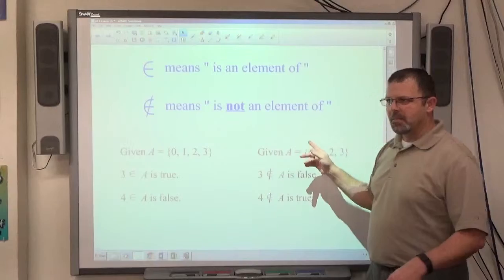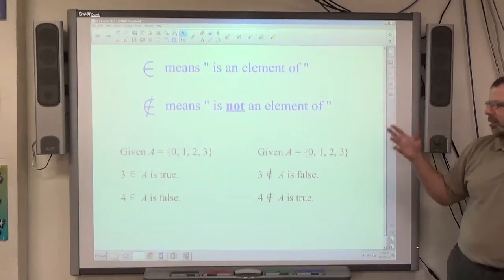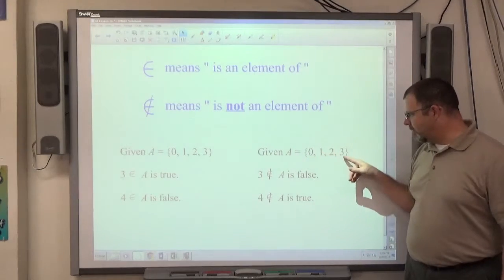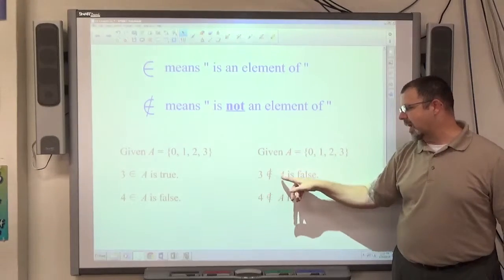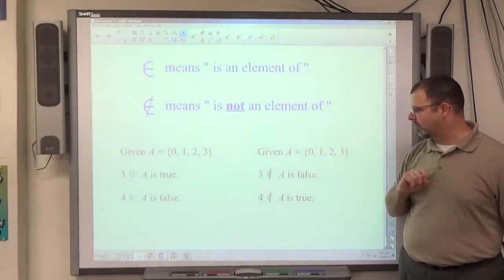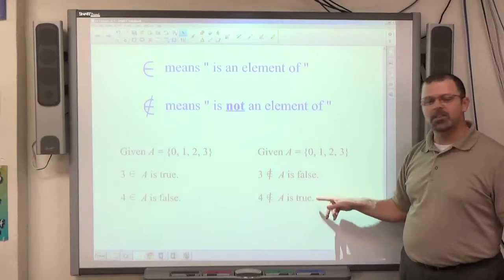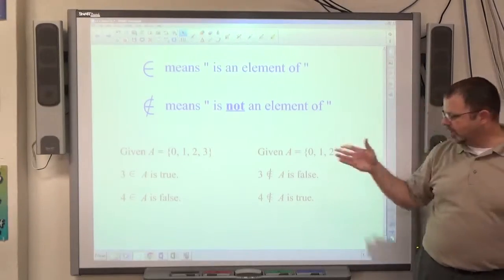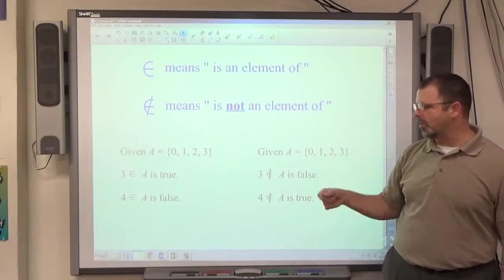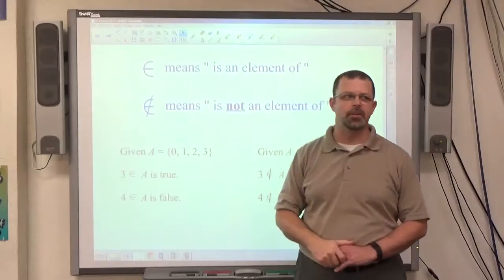The not is not an element of, it's just the other way around. The elements of A are 0, 1, 2, and 3. This is saying 3 is not an element of A. Well, it obviously is, that's false. 4 is not an element of A is true. So when you see a slash, you're expecting the number not to be there. If you don't see a slash, you're expecting the number to be there for truth.